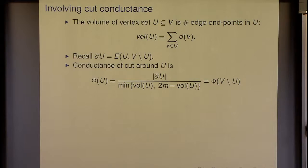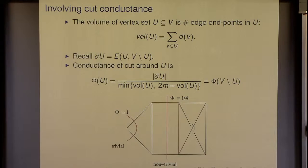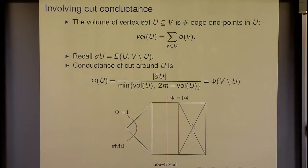This relates to edge expansion. When you don't have edge expansion, you have a low-conductance cut. For trivial cuts, the conductance is always one, since every single edge leaves the singleton vertex. If the set is bigger with edges hiding inside, you get smaller conductance — like one-fourth in this example. These are the non-trivial cuts, and those are the interesting ones: the minimum cuts hiding inside the graph with lots of things on both sides.